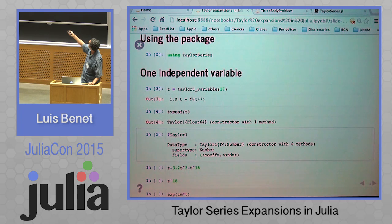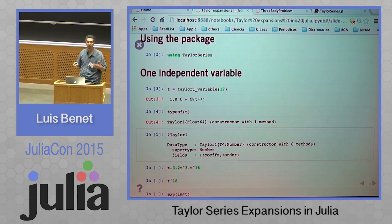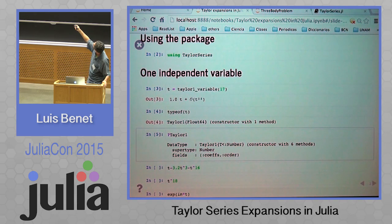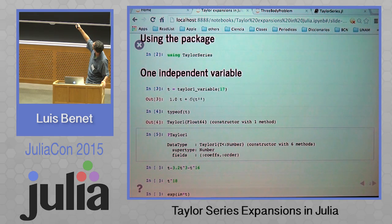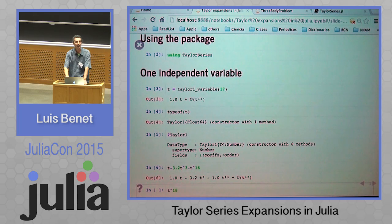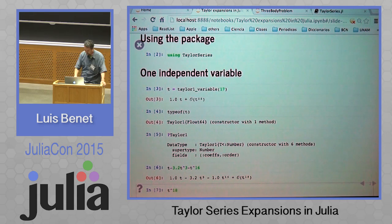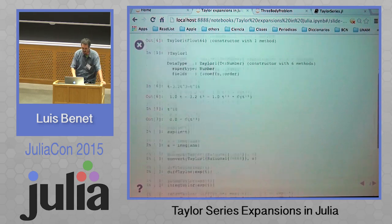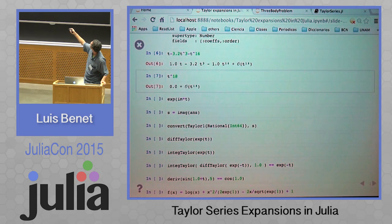If you look at what's going on inside, you have a vector of coefficients and the order. The order is the maximum thing you will compute, which in this case will be 17, so everything will be of order 18. You can now construct different things. If you write something to a larger order, you get clearly a 0.